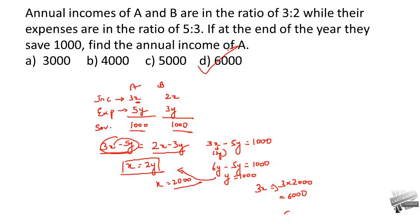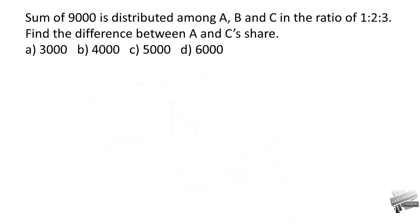These are conventional types of questions that do appear in the examination. Let's look at the next one: a sum of 9000 is distributed among A, B, and C in the ratio of 1 to 2 to 3.